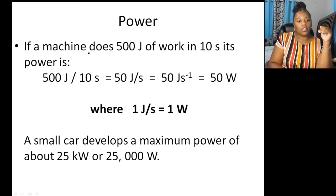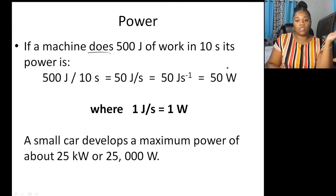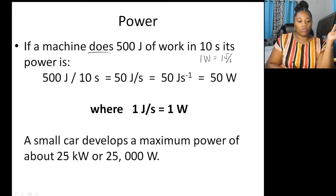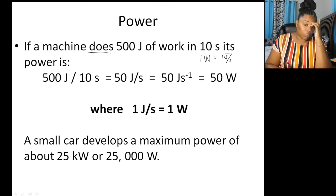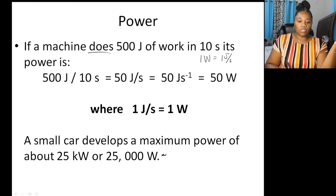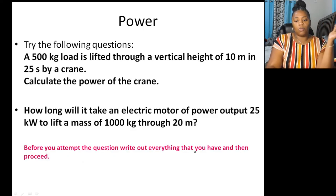If a machine does 500 joules of work in 10 seconds, its power is 50 joules per second, or 50 watts. A small car develops a maximum power of about 25 kilowatts, which is 25,000 joules per second.